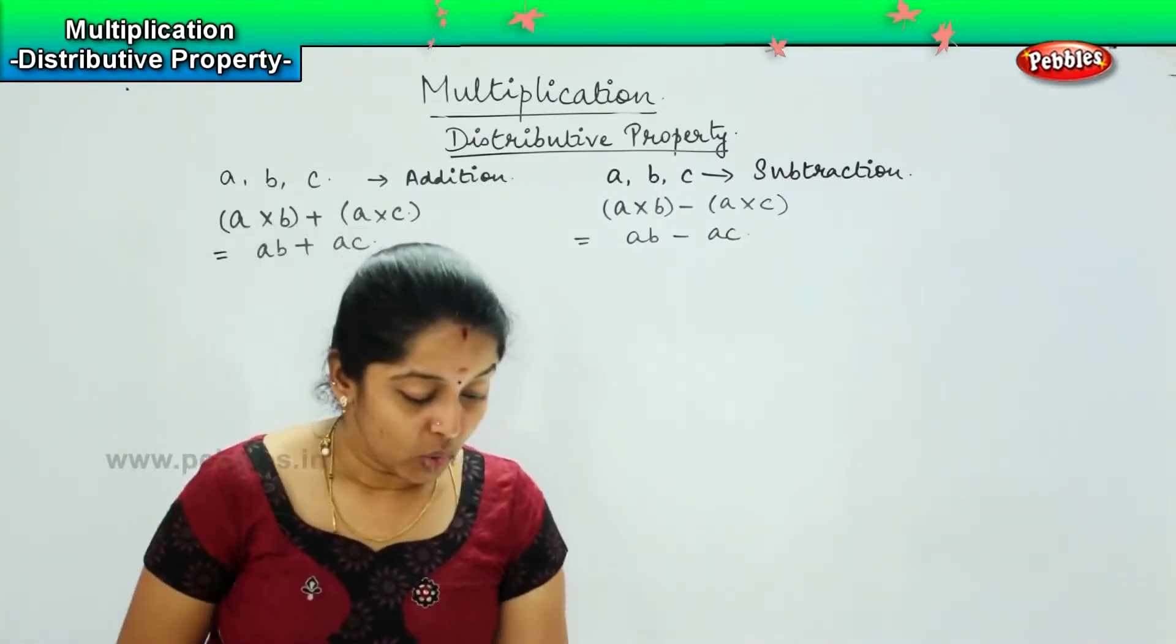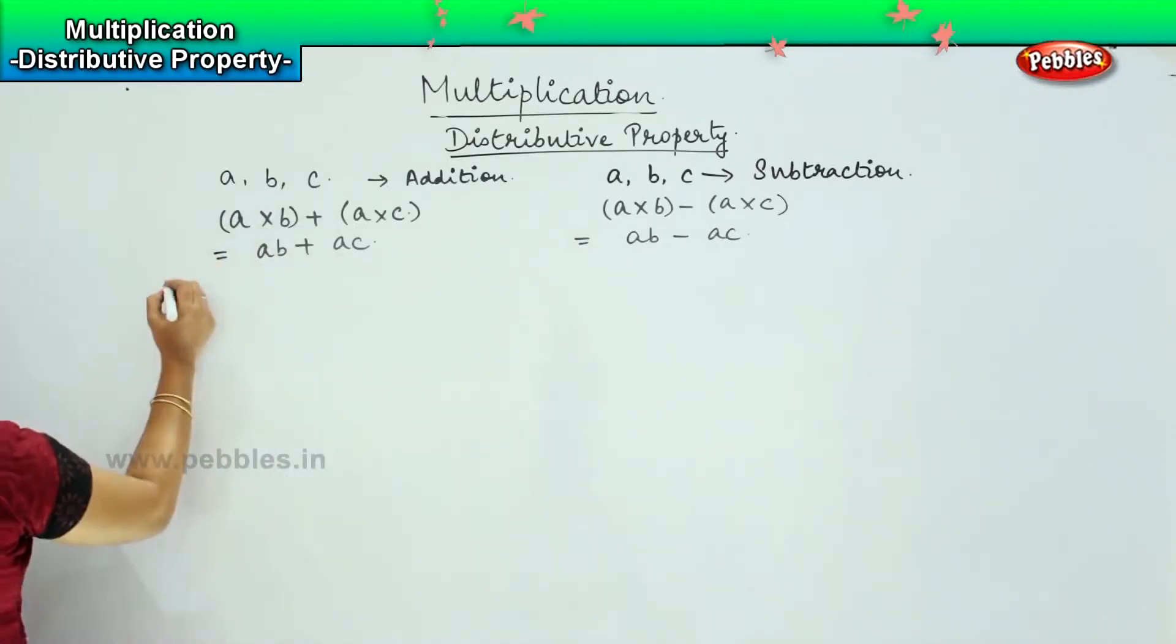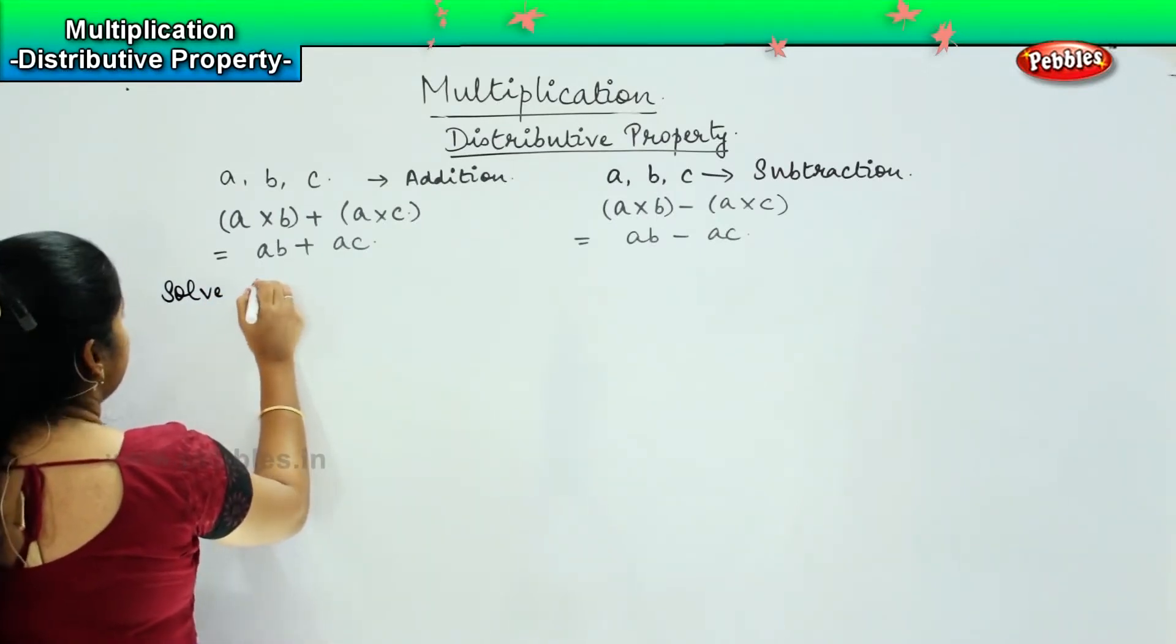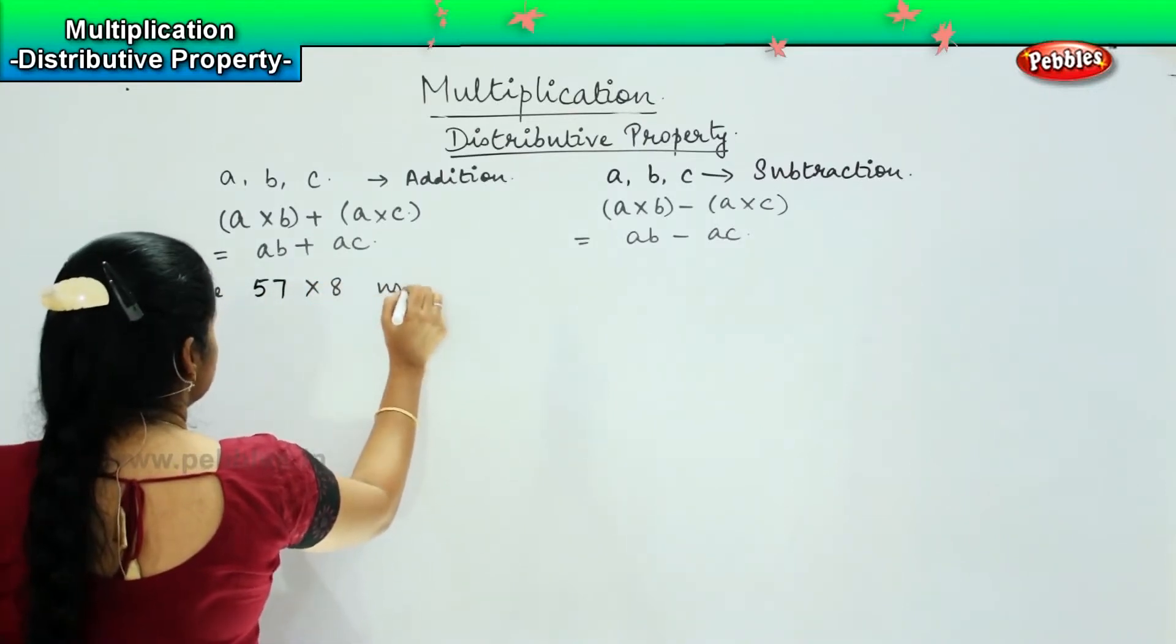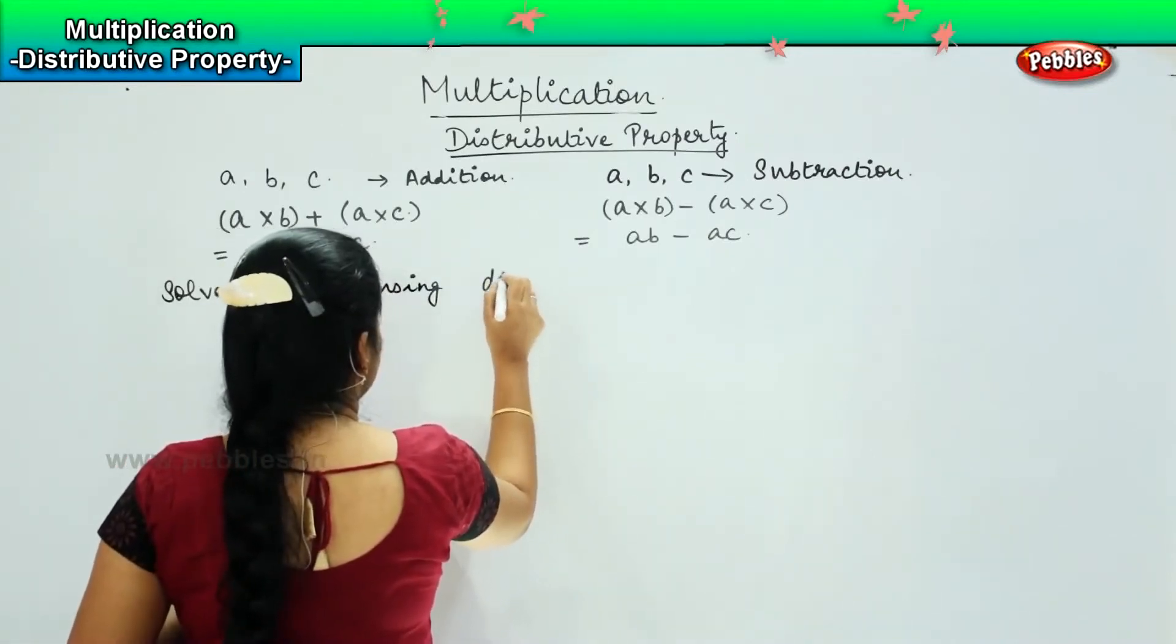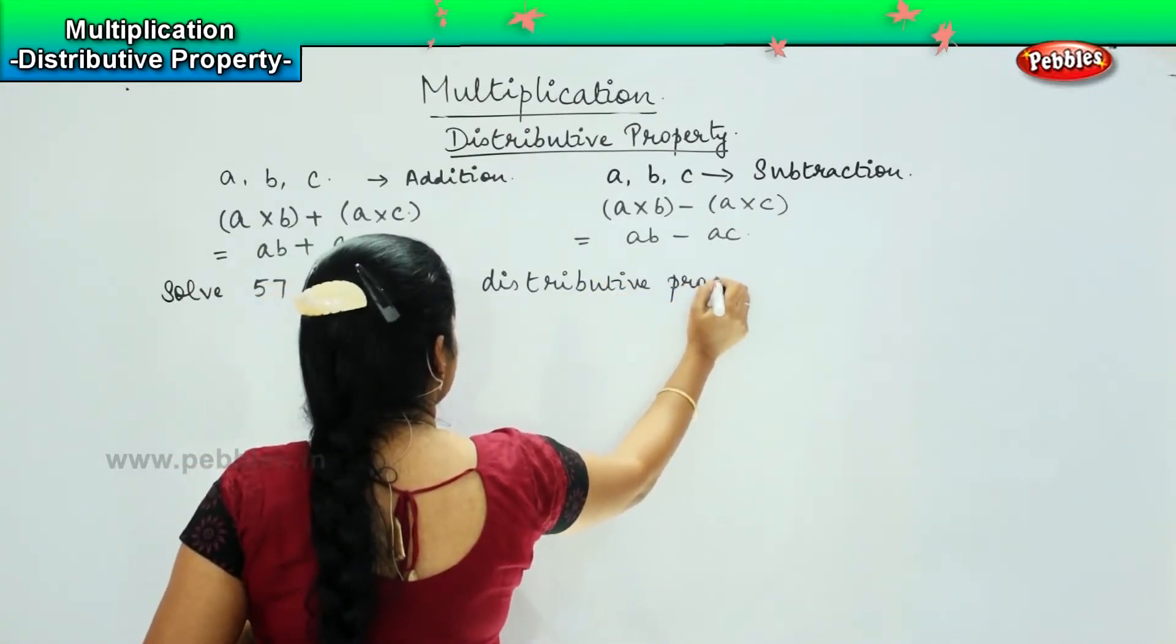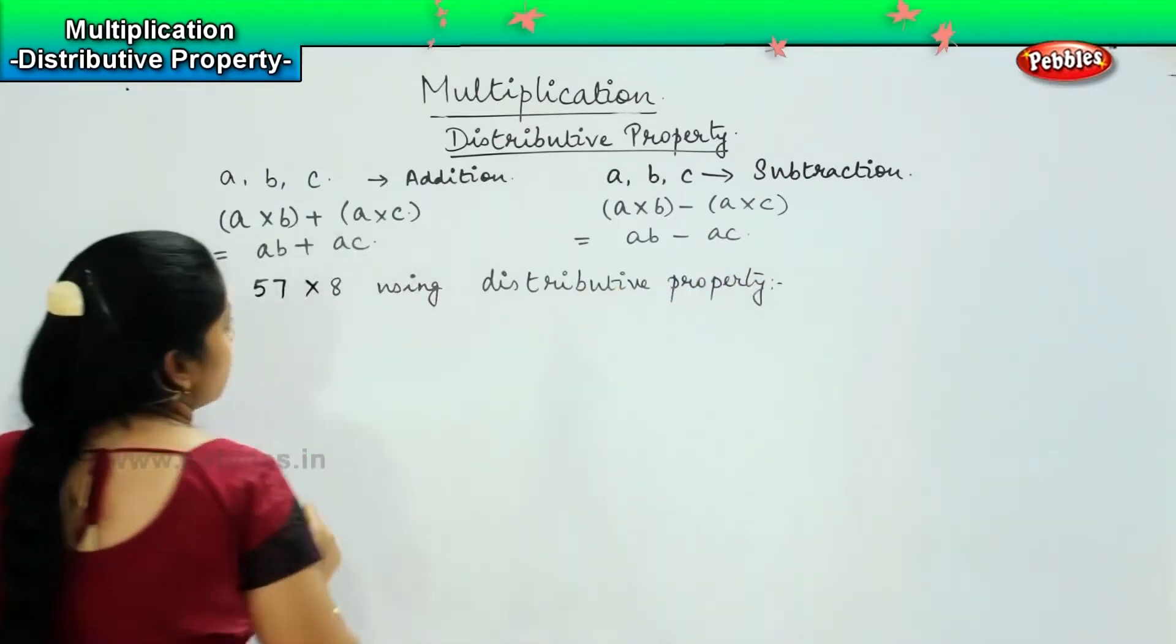So, let us try to solve this with an example. For example, if I have a sum: solve 57 into 8 using distributive property. Now, this is the question.